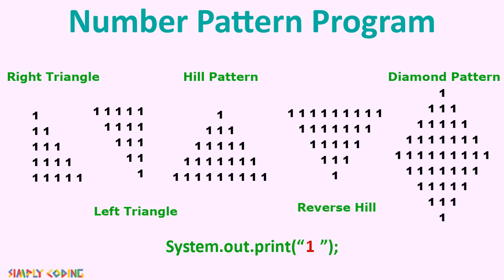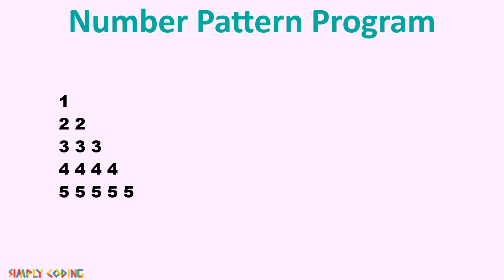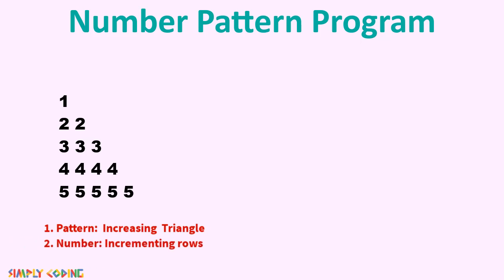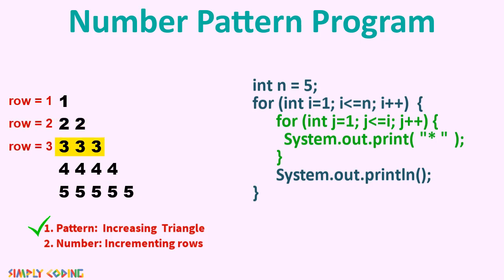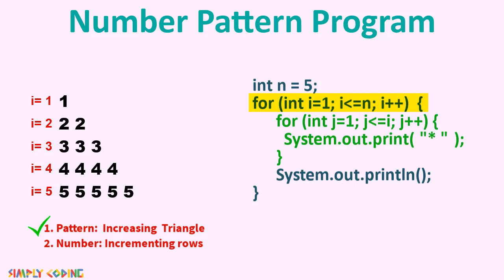Let's take a closer look at a more exam-relevant pattern. Again we break it into two parts: pattern and numbers. We know this is an increasing triangle, so we can immediately recall the code. The numbers start with 1 and increment by 1 in each row — so 1 is printed in row 1, 2 in row 2, 3 in row 3, and so on. The outer loop manages the rows. Some might say just print i, since i holds the row number — and that is actually correct and will work.